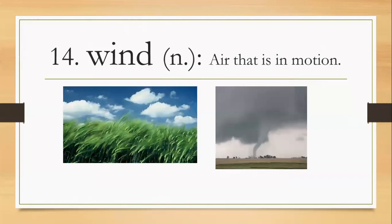Number fourteen, wind, W-I-N-D, wind. It's a noun, air that is in motion. On the picture on the left, we can appreciate that the wind is blowing because the grass or the plants over there are moving or are crooked to the side. And the picture on the right, we have a tornado, and tornado is being formed by strong winds.